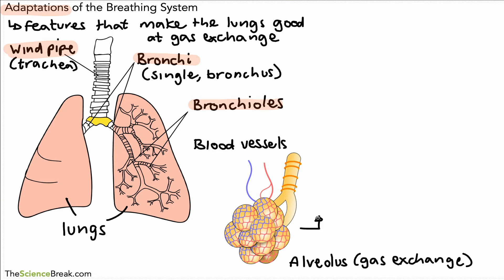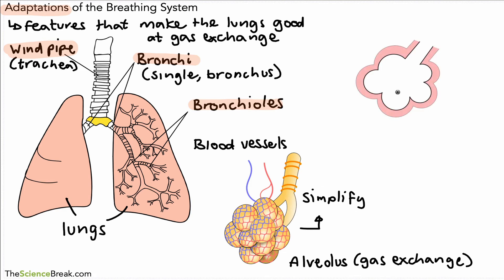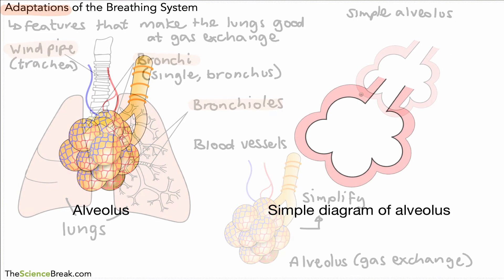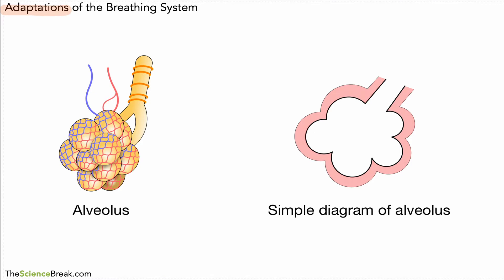We can do a slightly simpler version of this diagram just to help us understand it a bit better. So let's simplify — imagine a simple version that we've sliced in half. This is a simple version of an alveolus. Let's compare the two side by side so we can see the adaptations more clearly: the more accurate version on the left and the simple version on the right.